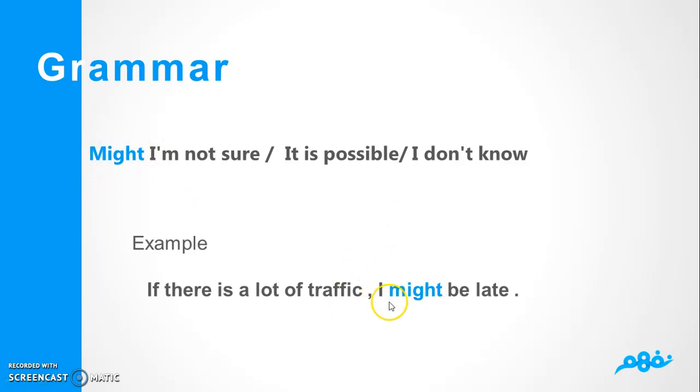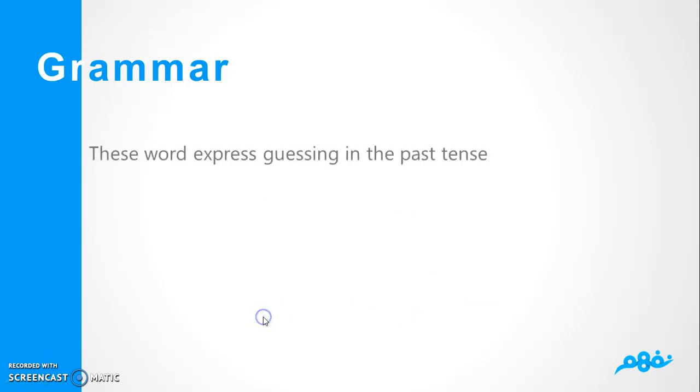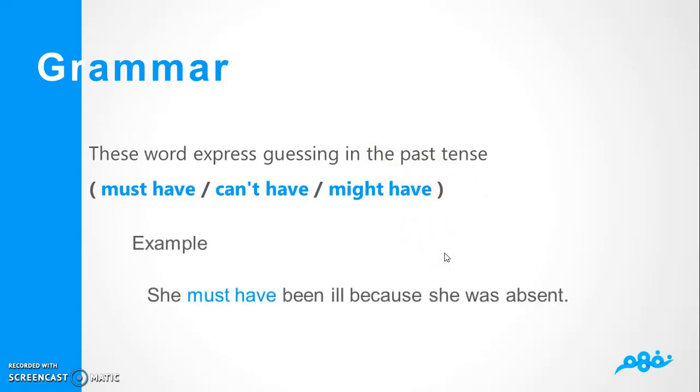In here, these words express guessing in the past tense. We have in the present tense only must, only can't, and only might. But the past tense we use must have or can't have or might have, just followed by have. Like: She must have been out because she was absent. She was absent is the evidence of the past tense, so we call that must have. She must have been out because she was absent.